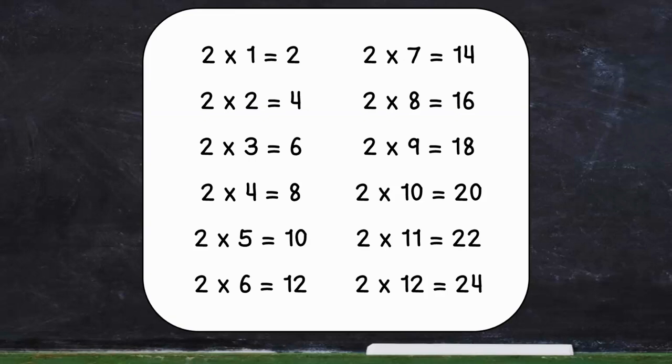So 2 times 2, well, 2 doubled is 4. 2 times 10, 10 doubled is 20. So those are your 2 multiplication fact family.